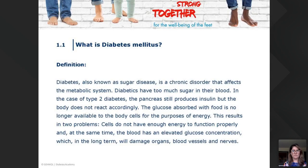As most of you know, diabetes is a sugar disease. It's a chronic disorder that damages organs, blood vessels, and nerves in the long term, because when the concentration is high, it causes a lot of damage. There are two types, and regardless of which type your client has, diabetes has these causes and results that you have to work with.